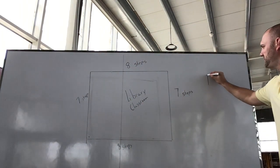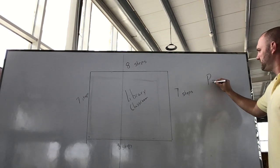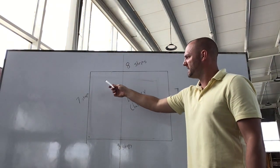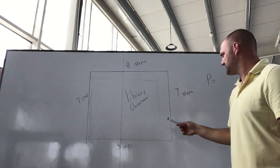This one is seven steps long. To find the perimeter of this, the perimeter, we have eight steps plus seven steps plus eight steps plus seven.